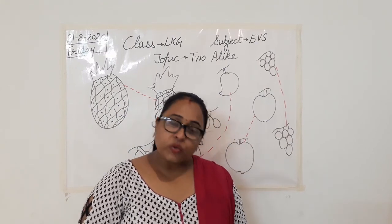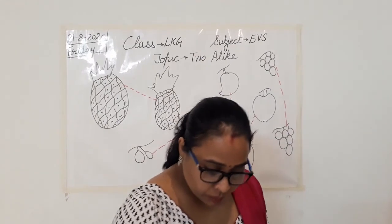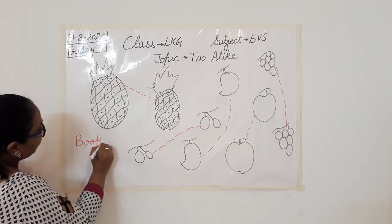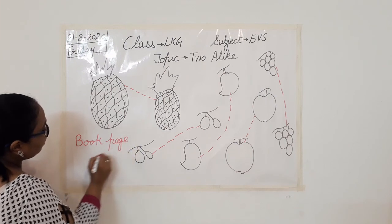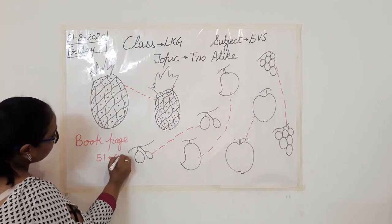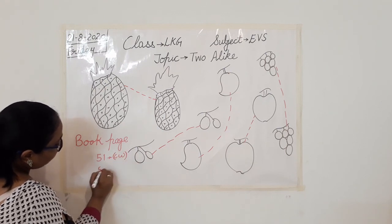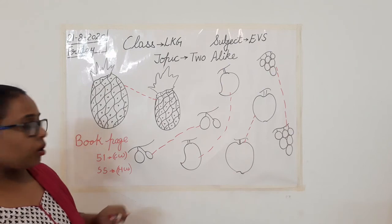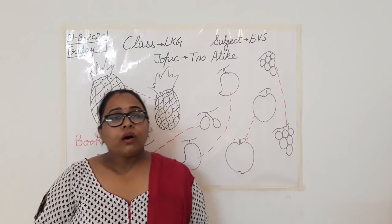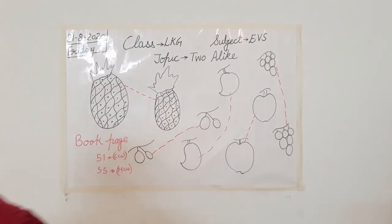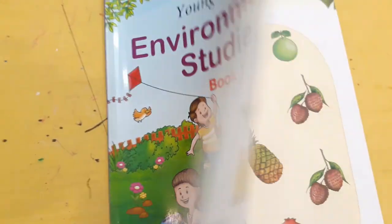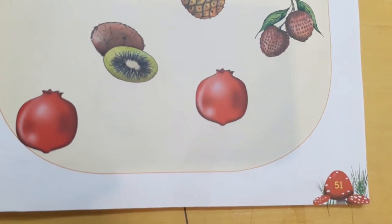Clear everyone? Now moving towards our today's book work. So what do you have to do? In your book, open page number 51. I will write here: book page number 51. So this is your today's class book, and page number 55 is your today's homework. Just open your book on page number 51 and I will tell you how you are going to do your today's book work.